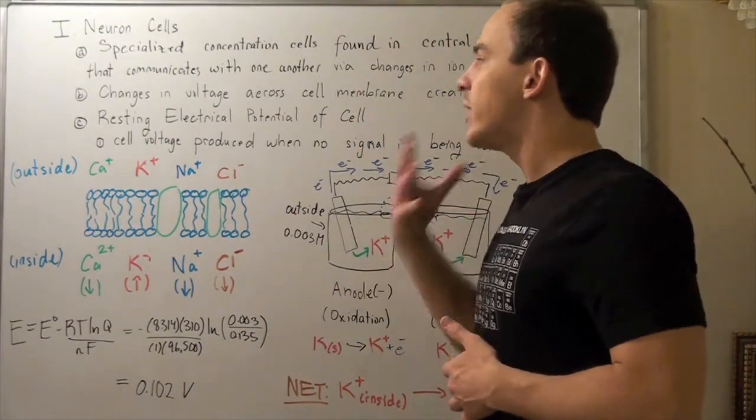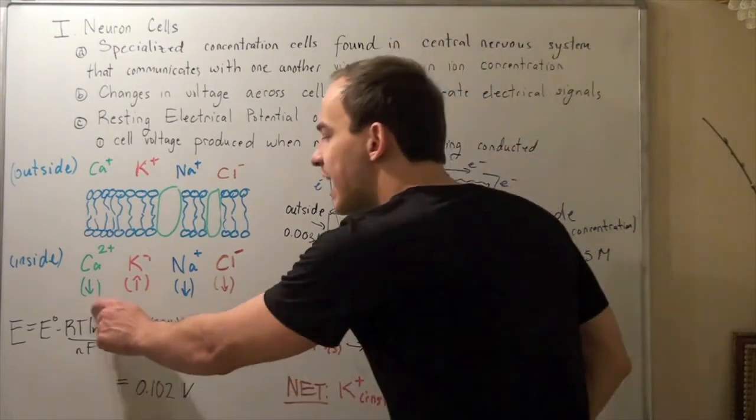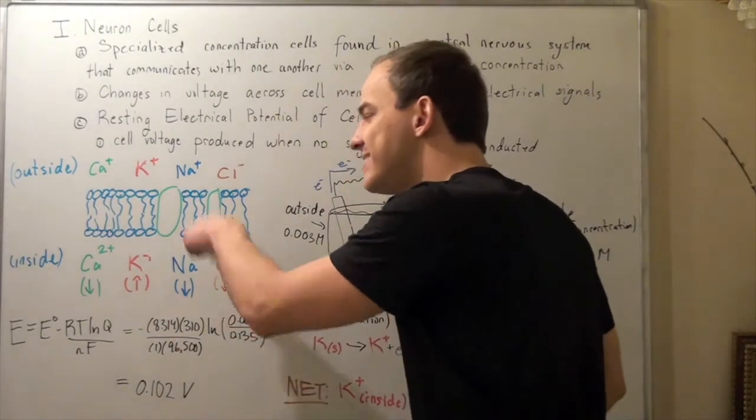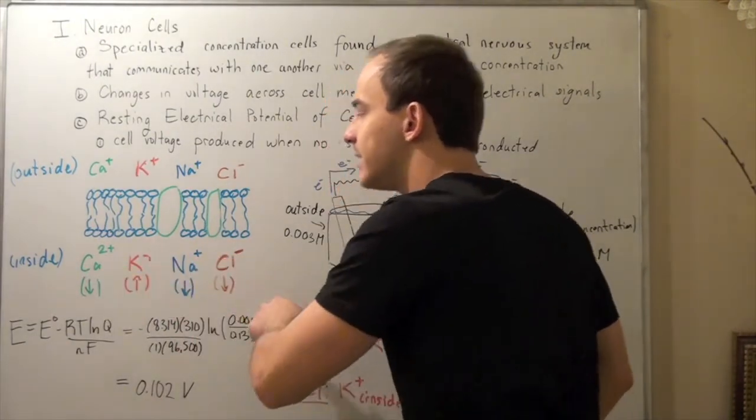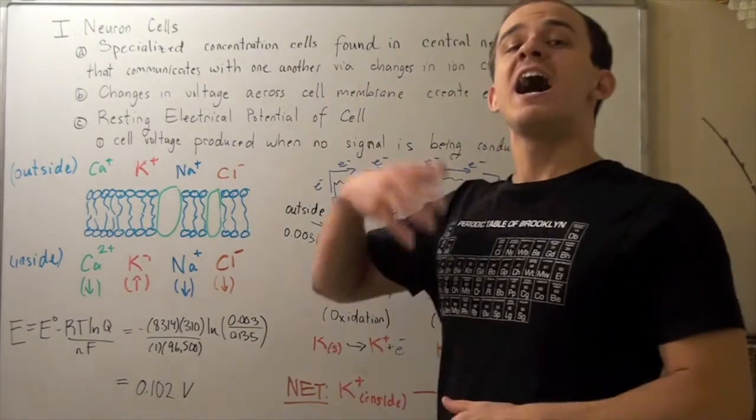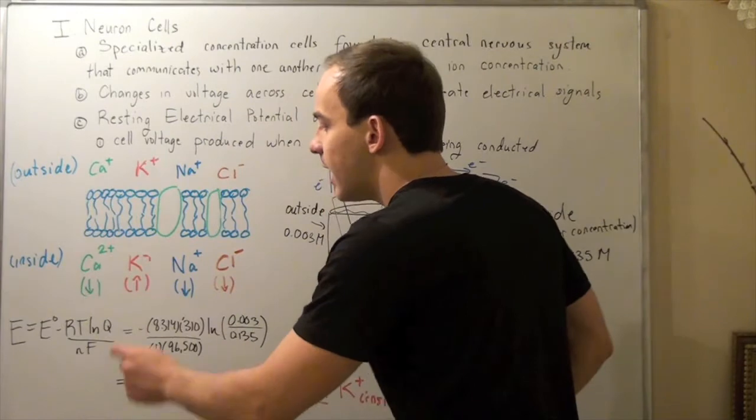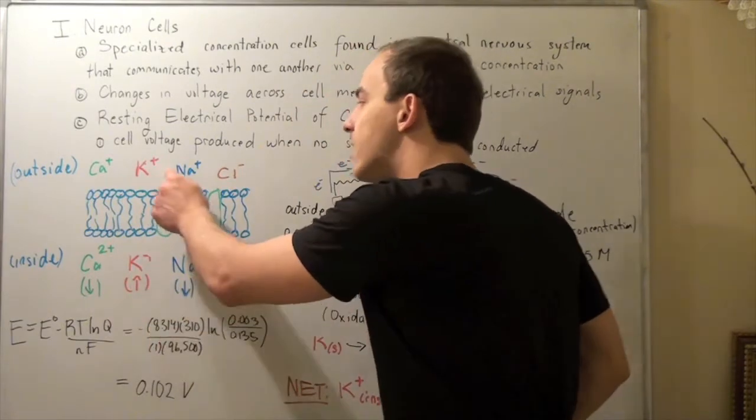When we're at our resting potential, we have a lower concentration of calcium, sodium, and chloride inside the cell than the outside. On the contrary, we have a higher concentration of potassium ions on the inside than the outside.